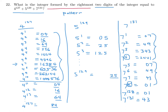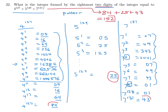Putting it all together: the last two digits of 4 to the power of 127 are 84, of 5 to the power of 129 are 25, and of 7 to the power of 131 are 43. Adding those up gives 152, and the rightmost two digits of that are 52. So 52 is the answer.